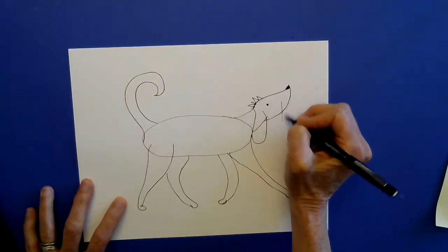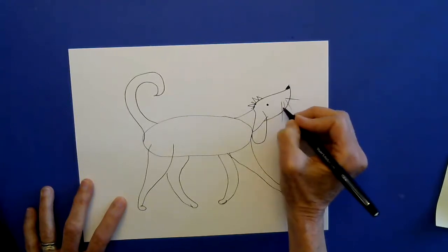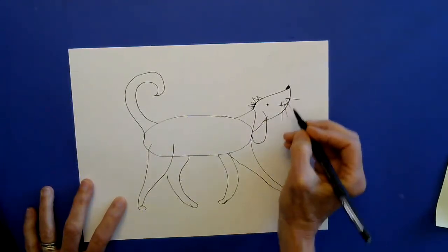He's got kind of whiskers that stick off different directions. He's got a smile because he's pretty happy with how his life is.